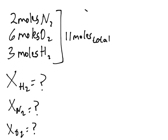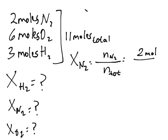Now let's compute each of the mole fractions. So let's start with the nitrogen. It would be X - the number of moles of N2 over the number of moles total. So 2 moles over 11 moles, so X_N2 is 0.18. That's the first one.